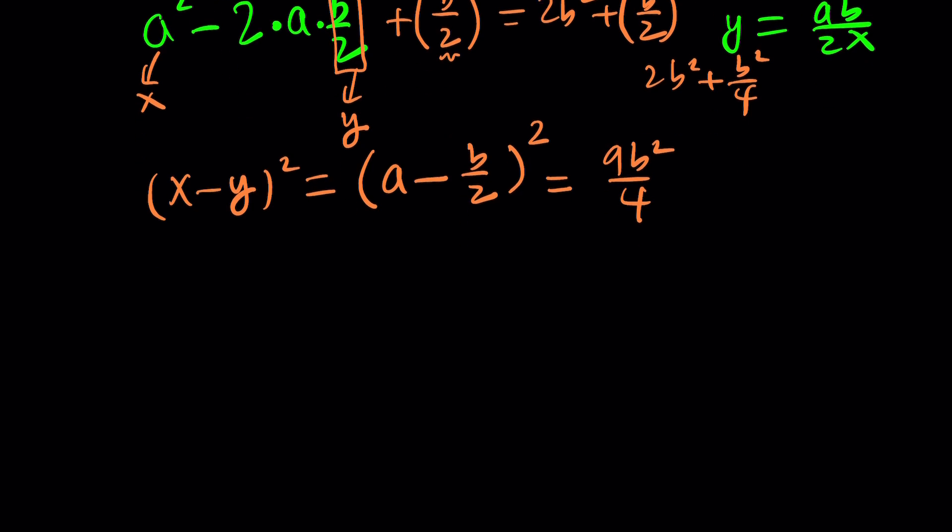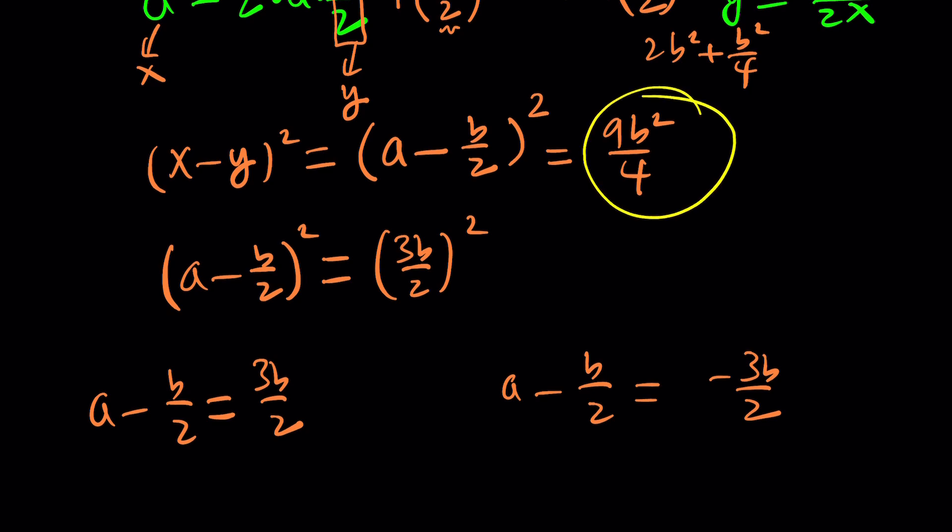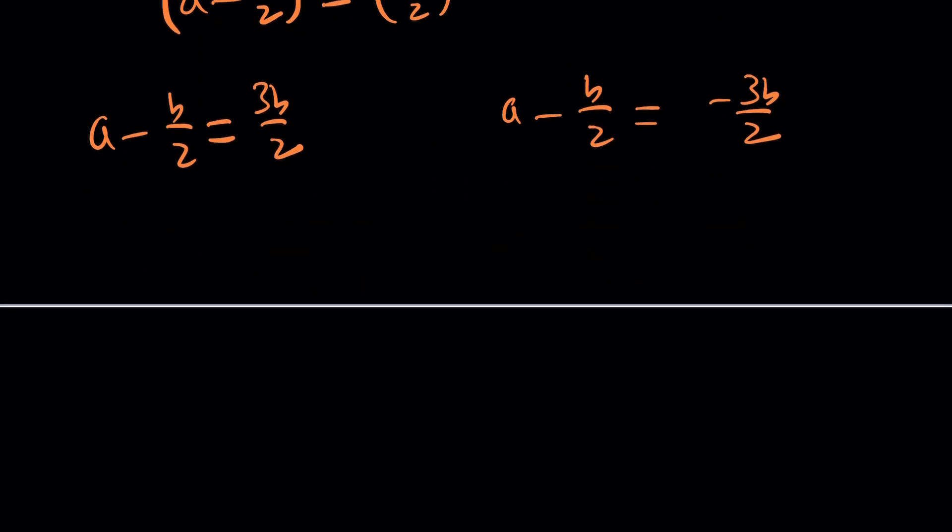Now the left-hand side is a perfect square. Is the right-hand side a perfect square? Yes, because 9 and 4 are really good numbers. This can be written as (a - b/2)² = (3b/2)². When x² = y², there are two solutions. One of them is a - b/2 = 3b/2. The other one is a - b/2 = -3b/2. If you add b/2 to both sides, you get a = 2b. And this one is going to give you a = -b.